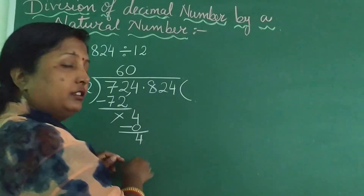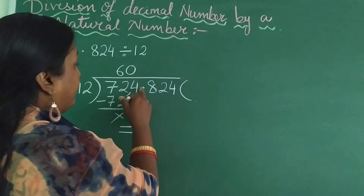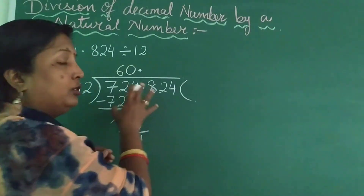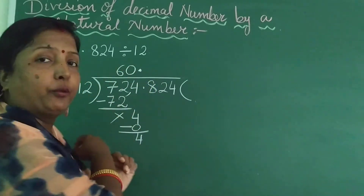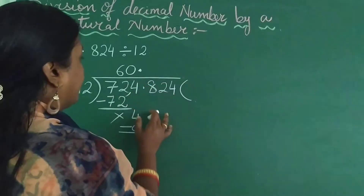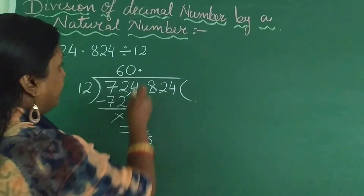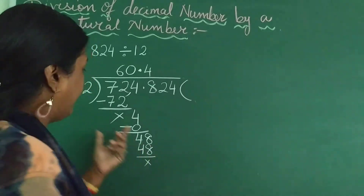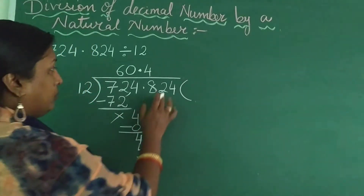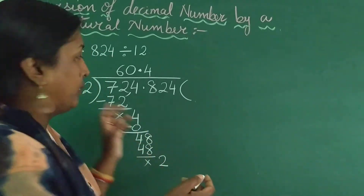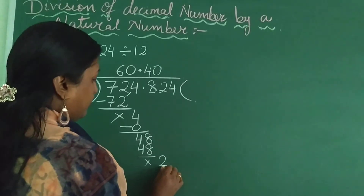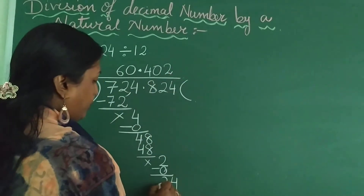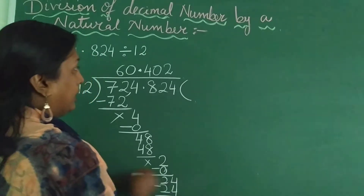Now you have to bring down the 8. So when you have to bring down the 8 — which is after the decimal point — you will first put the decimal point in the quotient. When do you put the decimal point? As soon as you start bringing down a number after the decimal point, you put the decimal point in the quotient. So we are going to bring down the 8. 12 times 4 is 48. The remainder is 0, so I am simply putting a cross. Now 2 comes down. 2 is smaller than 12, so 12 times 0 is 0. Then bring down 2 more: 12 times 2 is 24. Subtract, remainder 0.